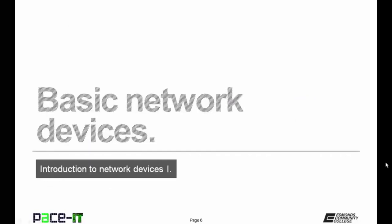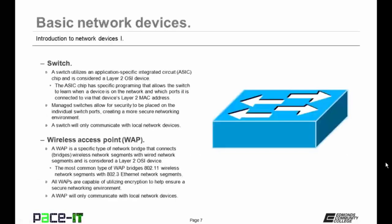Let's move on to basic network devices. A switch utilizes an application-specific integrated circuit chip, or an ASIC chip, and it is considered a Layer 2 OSI device. The ASIC chip has specific programming that allows the switch to learn when a device is on the network and which port that device is connected to via that device's Layer 2 MAC address. Managed switches allow for security to be placed on the individual switch ports, creating a more secure networking environment. One caveat with switches: a switch will only communicate with local network devices, meaning it cannot communicate with remote networks.